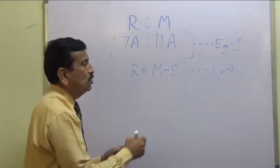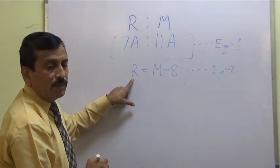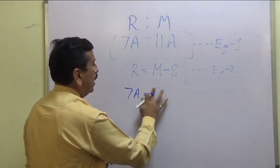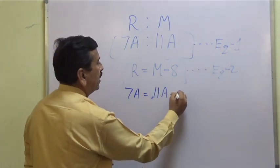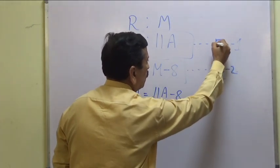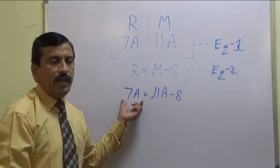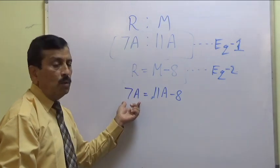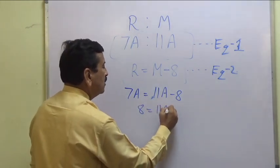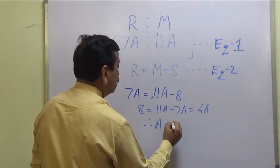With these two equations, we substitute the value. R is 7a equals M, which is 11a, minus 8. The moment we convert two relationships into one equation, we can solve it. Bringing 8 to one side and simplifying, we get 4a, and therefore a equals 2.